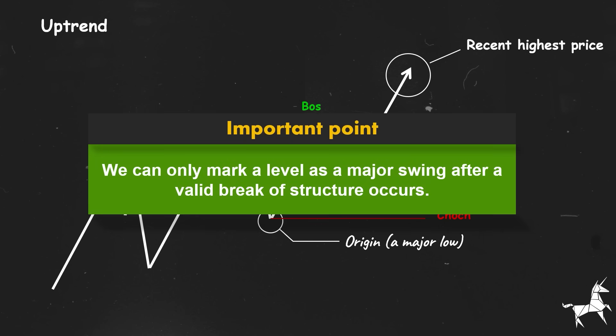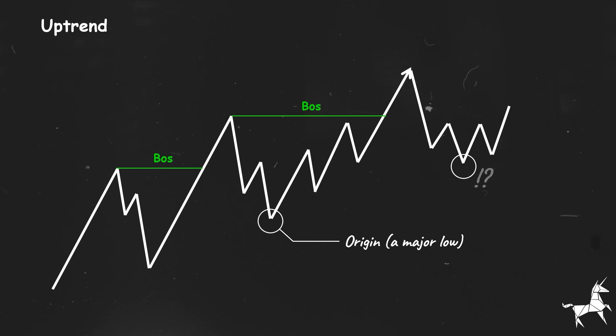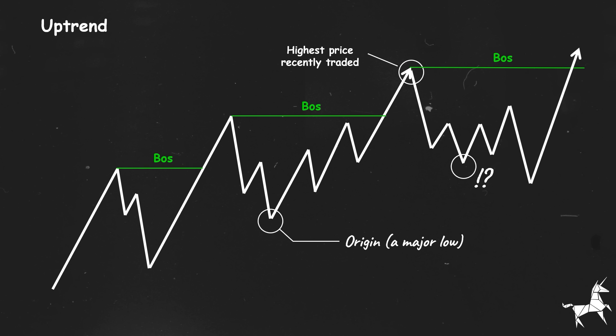Now here's an important point: we can only mark a level as a major swing after a valid break of structure occurs. For instance, this low cannot be identified as a major swing low until a valid break of structure takes place. This is the highest price recently traded, so a break of structure is only valid when the price breaks through this level. Only after a valid break of structure can we mark a level as a major swing. Thus, this level is considered a major swing low, while the others are minor.